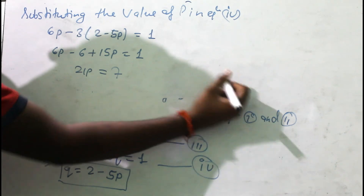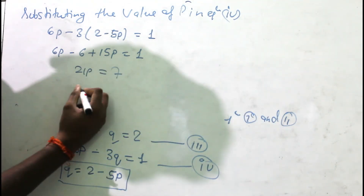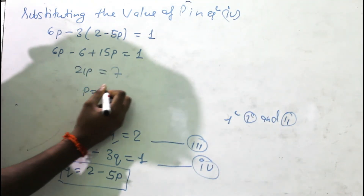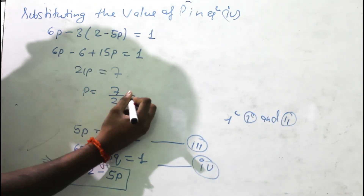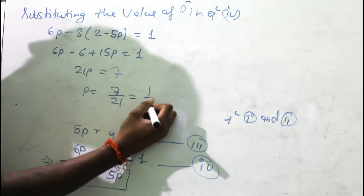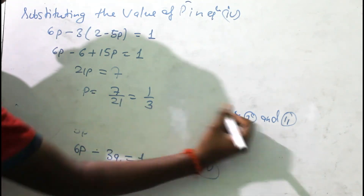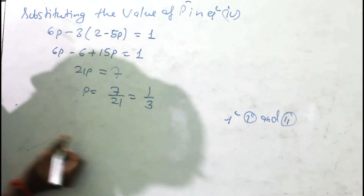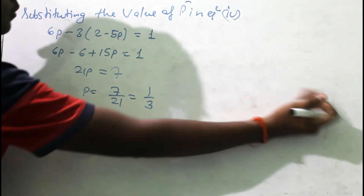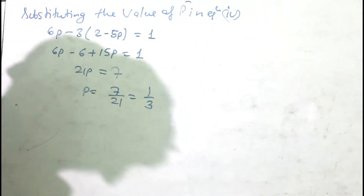So p = 7/21 = 1/3. We have found the value of p = 1/3.